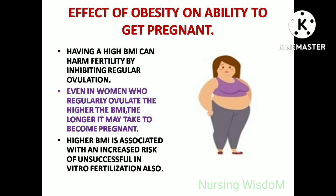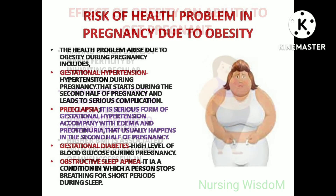Regarding the effect of obesity on ability to get pregnant: having a high BMI can harm fertility by inhibiting regular ovulation. Even in women who regularly ovulate, the higher the BMI, the longer it may take to become pregnant. A higher BMI is also associated with an increased risk of unsuccessful in vitro fertilization.